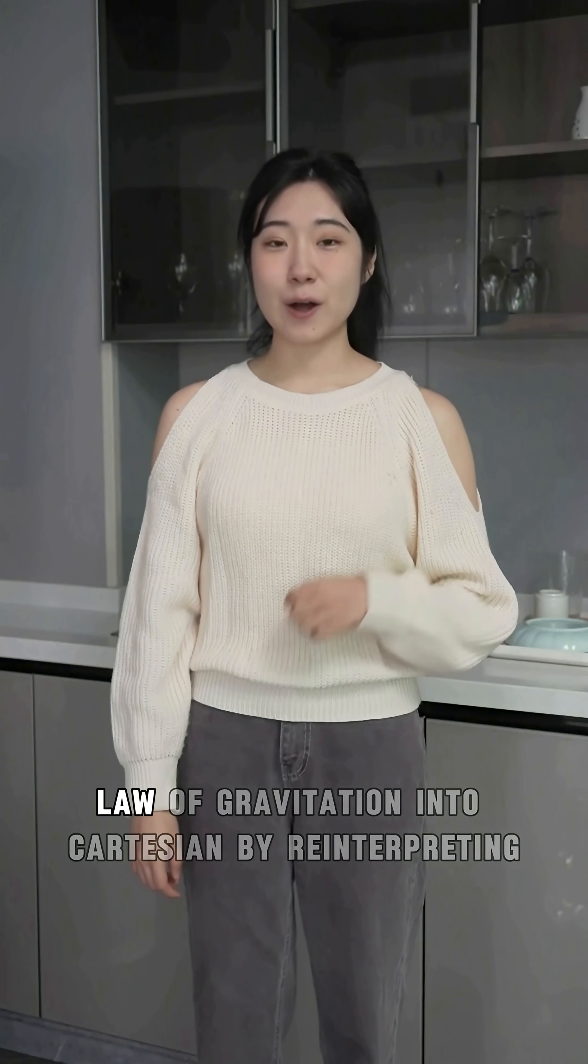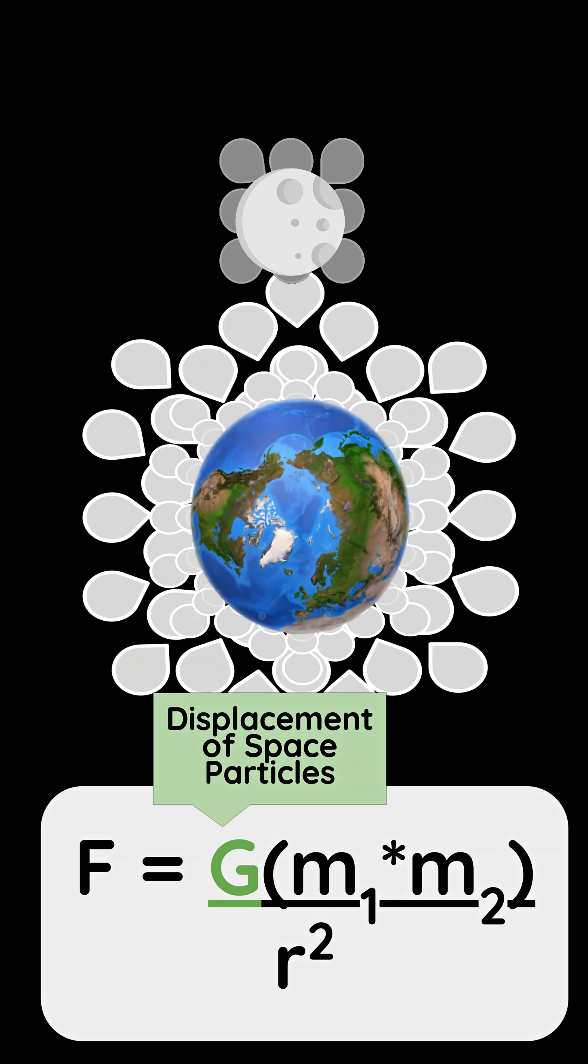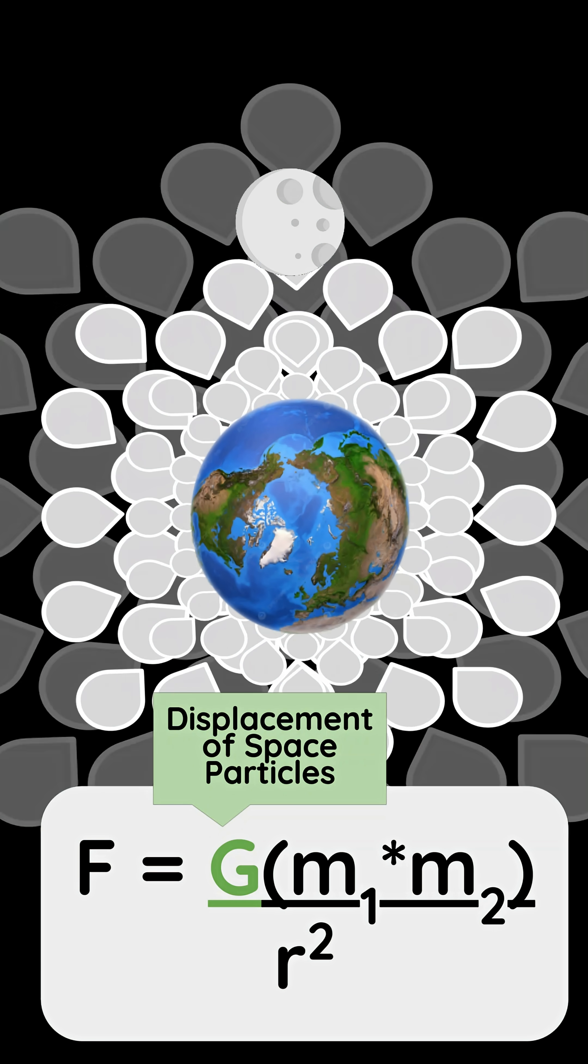We convert Newton's universal law of gravitation into Cartesian by reinterpreting G as the volume of space particles displaced by the smallest unit of matter.